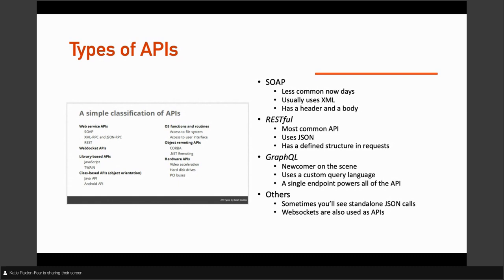GraphQL has just one endpoint, which can be really powerful because users don't have to remember things, and it has this kind of custom query language — and it always uses JSON. You might also see WebSockets used as APIs, hardware APIs, quite a lot in car hacking, API structures for data transfer in healthcare, and APIs built into programming languages. APIs really are everywhere and come in so many different shapes and sizes. But today I'm mainly talking about RESTful and GraphQL because they are the most common.